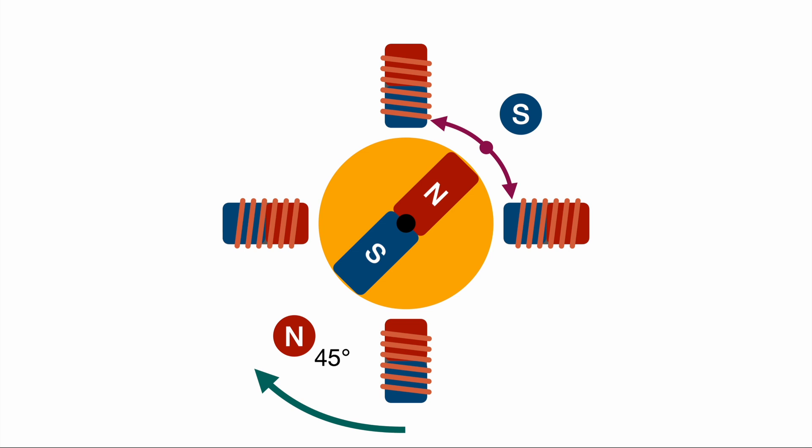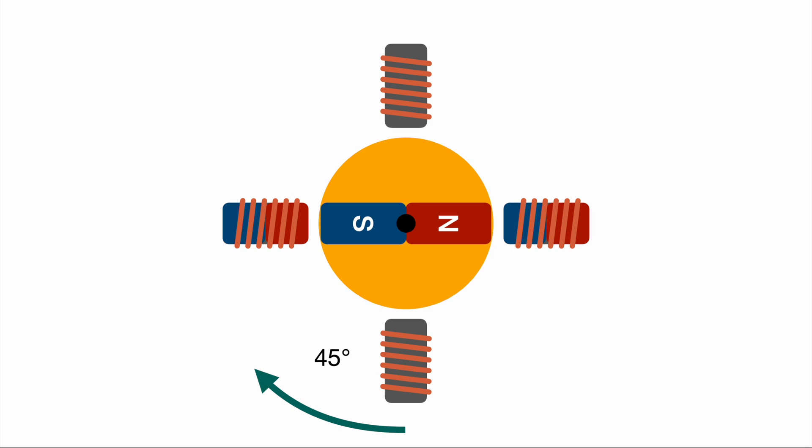By switching from a full step to a half step operation we can double our precision or our resolution. To perform the next step we will go back to the classic mode and basically deactivate the vertical pair of solenoids and only activate a horizontal pair of solenoids, thereby completing the second half of the step, another 45 degrees summing up to a total of 90 degrees as before.